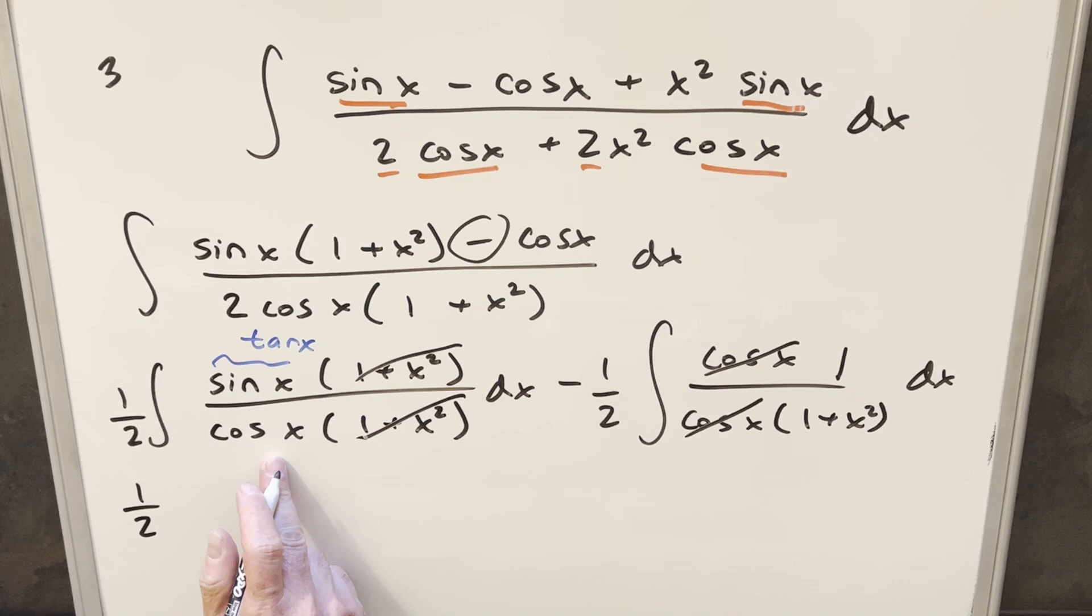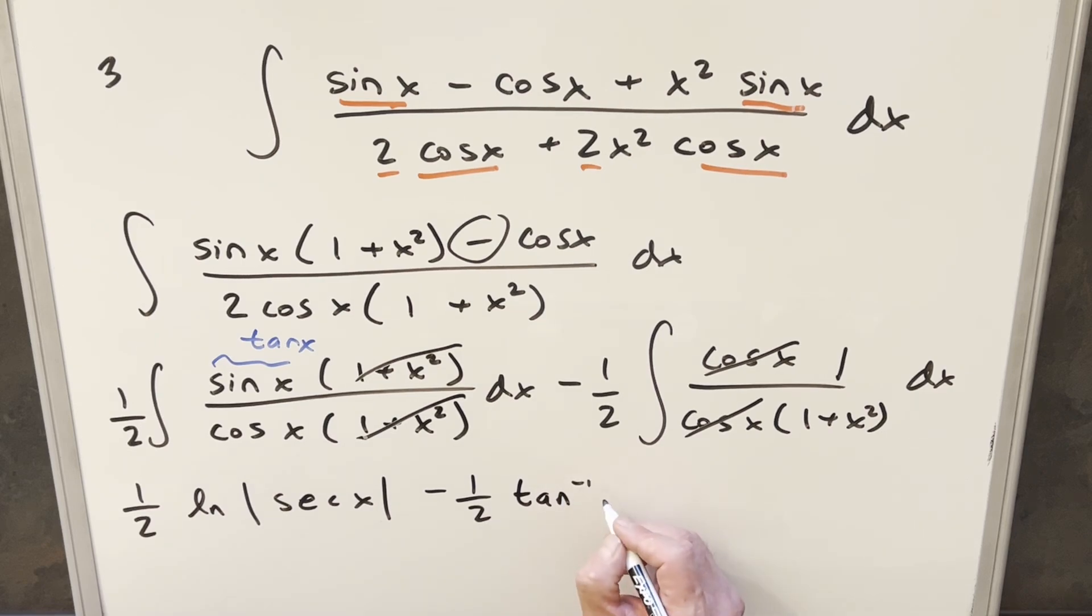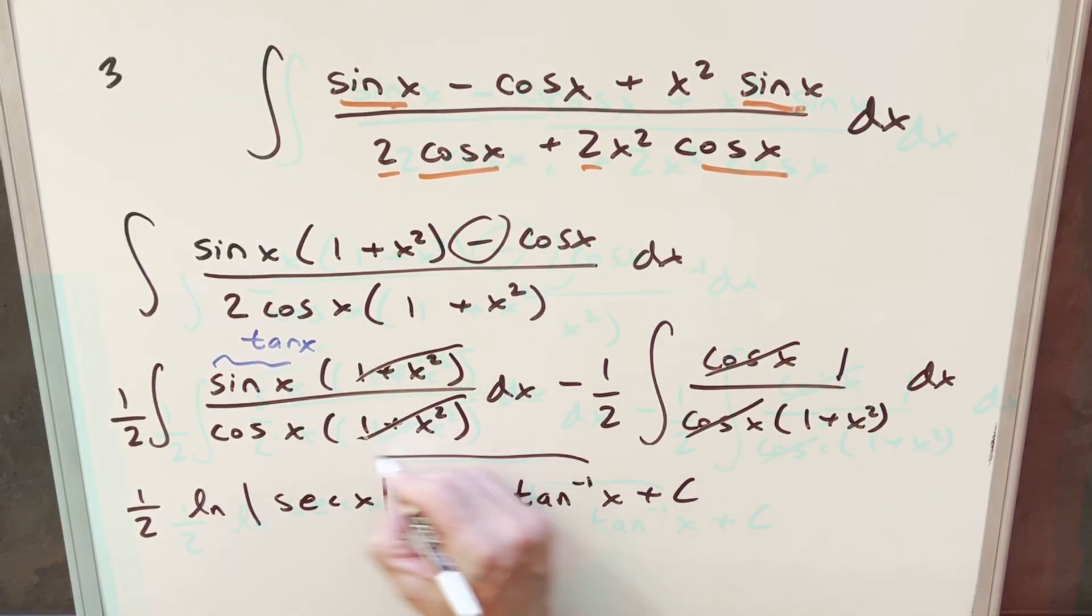Here, we're going to have 1 half. Integral of tan x is going to be natural log absolute value of secant x. And then here, we have minus 1 half. This is going to be exactly our arctan formula. So this here is just going to be arctan of x. Add a plus c, and that's it.